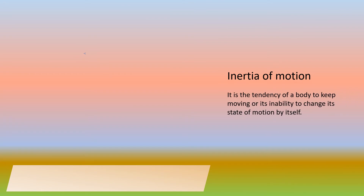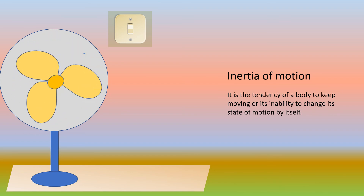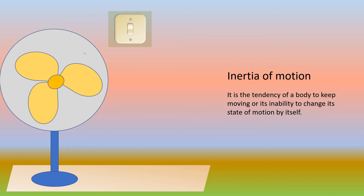Now we know what inertia of motion is. Here is another example: when you switch off a fan, the fan doesn't stop all of a sudden — it rotates a bit more and then stops. This is an example of inertia of motion.